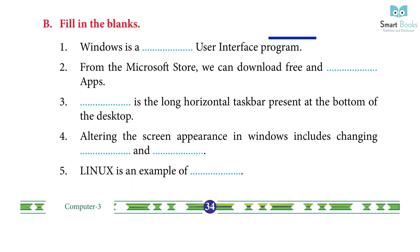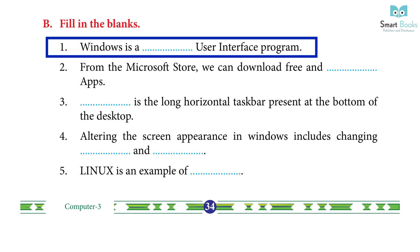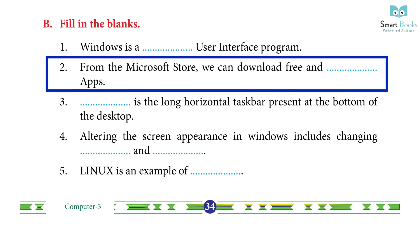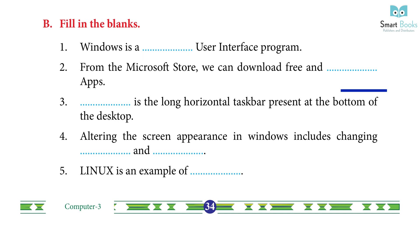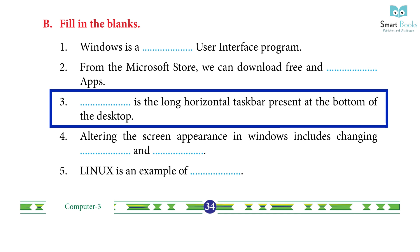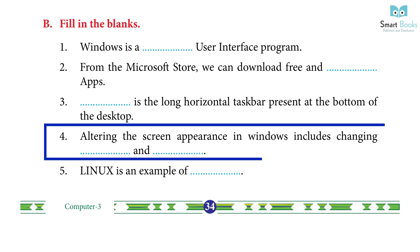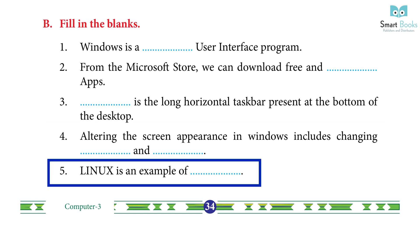B. Fill in the blanks: 1. Windows is a graphical user interface program. Answer: Graphical. 2. From the Microsoft Store, we can download free and paid apps. Answer: Paid. 3. The long horizontal taskbar present at the bottom of the desktop is the Windows Taskbar. Answer: Windows Taskbar. 4. Altering the screen appearance in Windows includes changing wallpaper and screen saver. Answer: Wallpaper and screen saver. 5. Linux is an example of an operating system. Answer: Operating system.